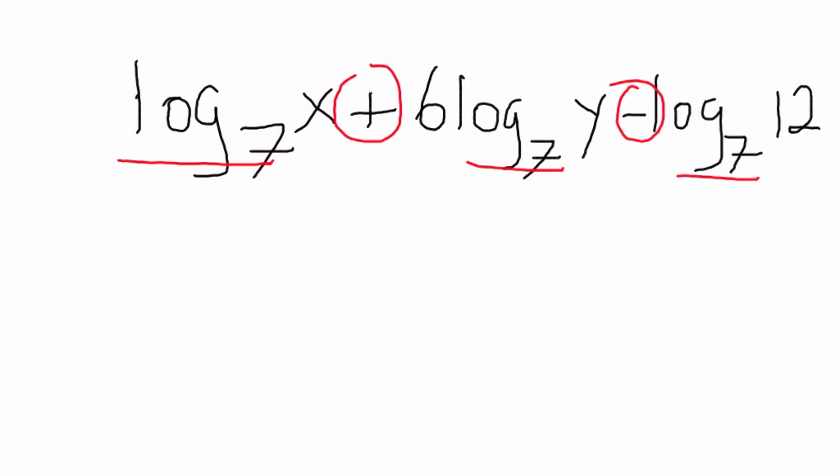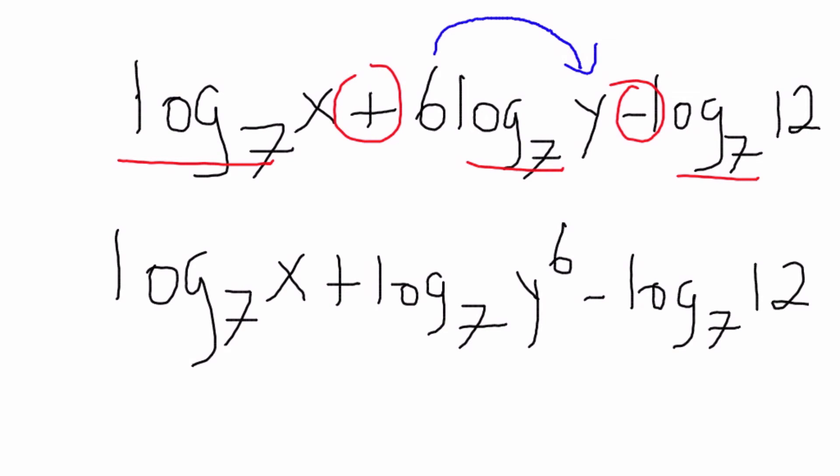So what we did the first, last time, again, is basically take this number here and make it an exponent. So we're going to do the same thing right now. So we're going to have log base 7 of x plus log base 7 of y to the 6th minus log base 7 of 12.